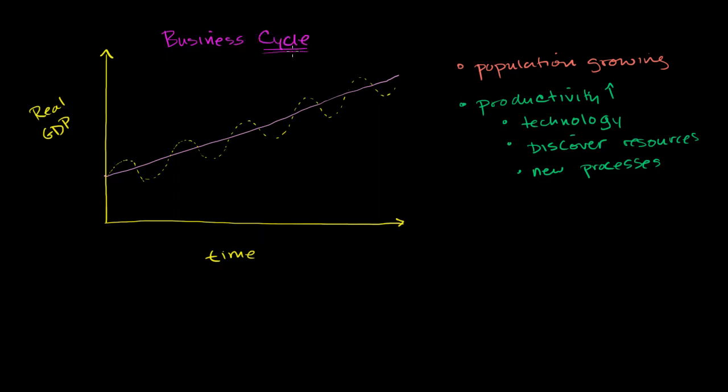And the term cycle is a little bit misleading. Whenever you think of a cycle, and even the way I drew it, it kind of looks like a nice, well-defined pattern, and every the same amount of years you're going up and down. It kind of implies that it's predictable, but the reality is that the business cycle is very unpredictable.